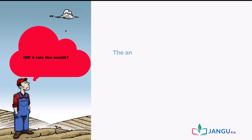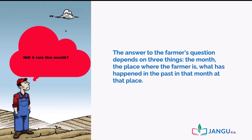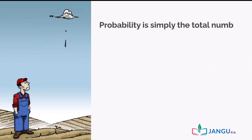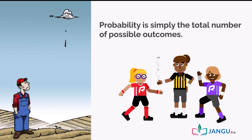The answer to the farmer's question depends on three things: the month, the place where the farmer is, and what has happened in the past in that month at that particular place. For example, the probability of flipping a coin and it being heads is 1 over 2, because there is only one outcome and the total number of possible outcomes is 2 — a head or a tail.